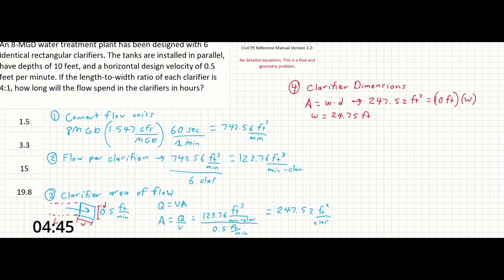Now that we have one of the dimensions we need, we can find the rest, in this case the length. The problem also gives us the length to width ratio of each clarifier as being 4 to 1.